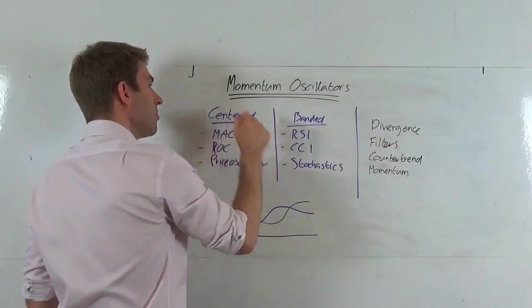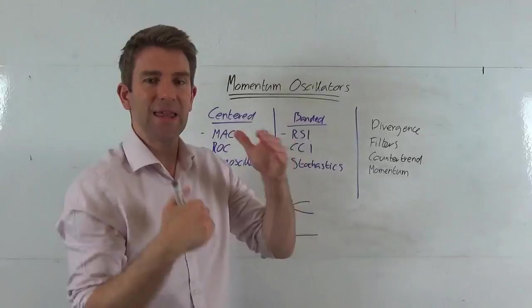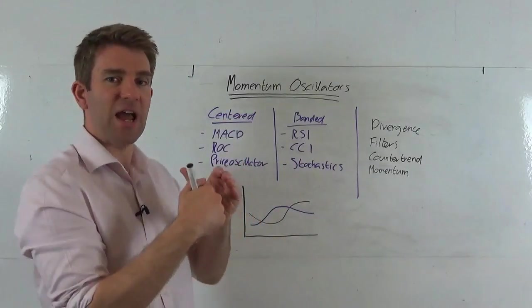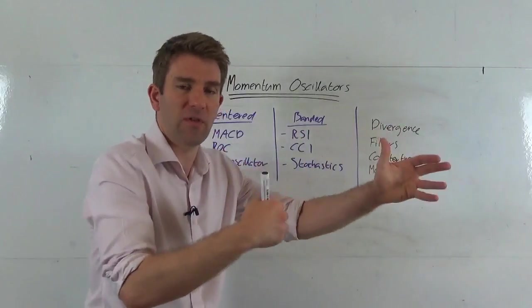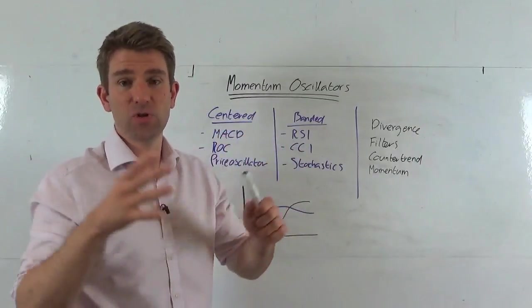A momentum oscillator is pretty much telling us how quickly price is moving. It's almost like the rate of change - how quickly price moves from one point to another. A very broad basic oscillator to get a good understanding of this is to literally plot two moving averages.